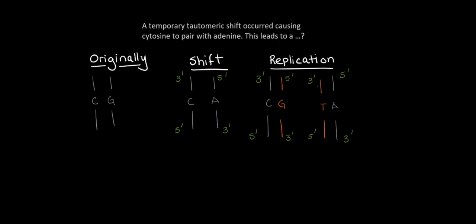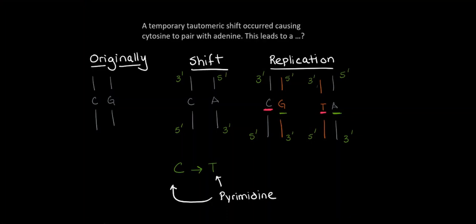Once we've done that, we can easily see which strands are equivalent to one another. Cytosine runs three-prime to five-prime and thymine also runs three-prime to five-prime, so those two are equivalent. Guanine and adenine are both five-prime to three-prime, so those are equivalent. We pick one set — I'll take cytosine and thymine. Thymine is a pyrimidine, and cytosine is also a pyrimidine. Going from pyrimidine to pyrimidine is a transition tautomeric shift — that's the answer.